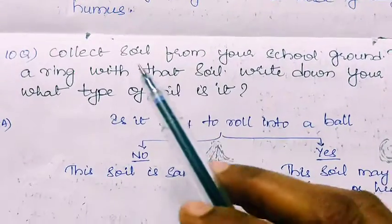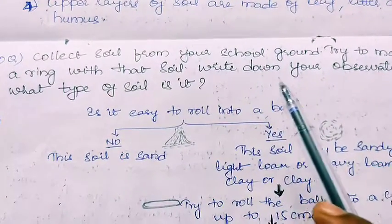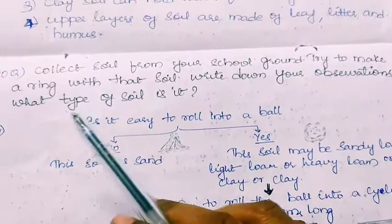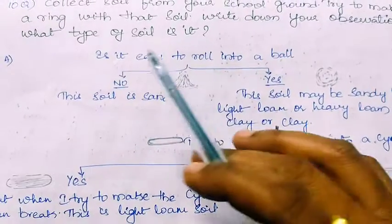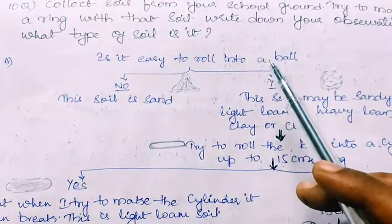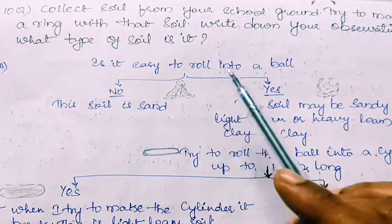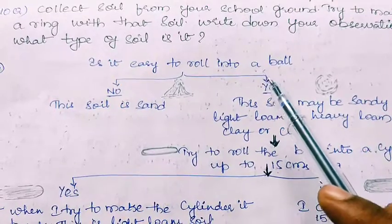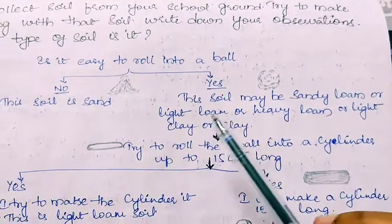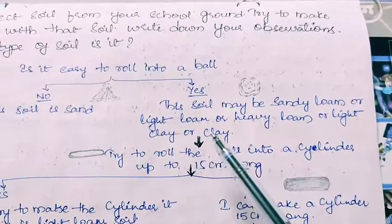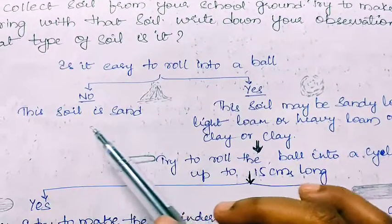Tenth question: Collect soil from your school ground, try to make a ring with that soil, write down your observations, and identify what type of soil it is. Here is a flow chart. First, is it easy to roll into a ball? If the soil forms a ball, then the soil may be sandy loam, light loam, heavy loam, light clay, or clay. If it does not form a ball, then the soil is sandy soil.